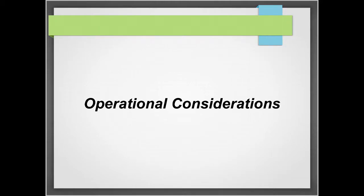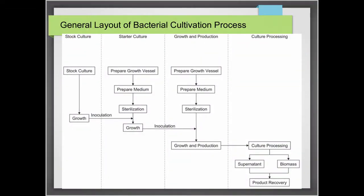As part of this lecture, we'll talk about operational considerations in bioreactors and fermentors. This is a general layout of your bacterial cultivation process. You start with a stock culture, which is maintained such that there is no mutation, and the specific strain of your organism is controlled — it is genotypically uniform throughout. You grow your stock culture to create your starter culture.